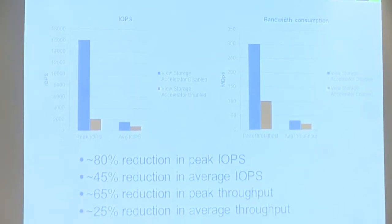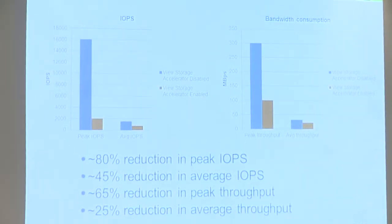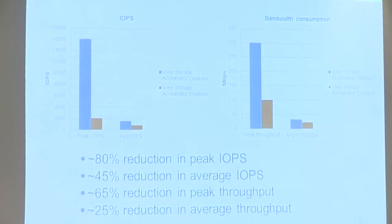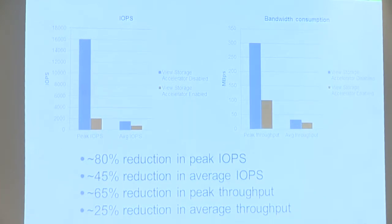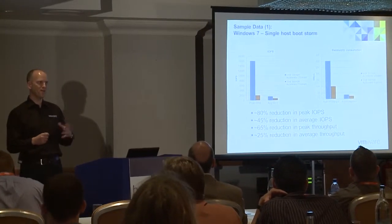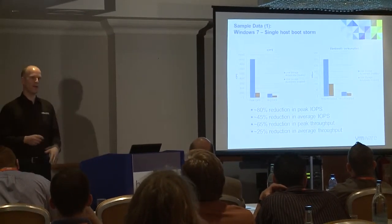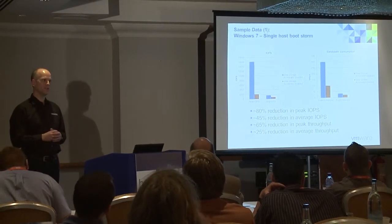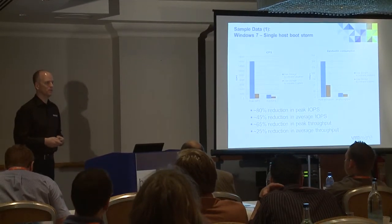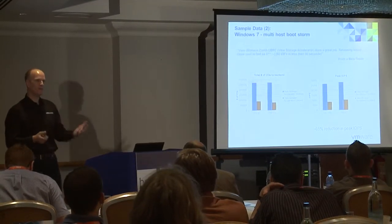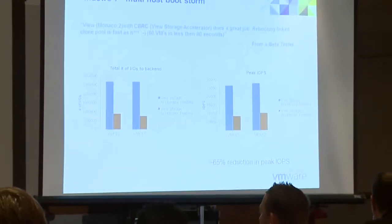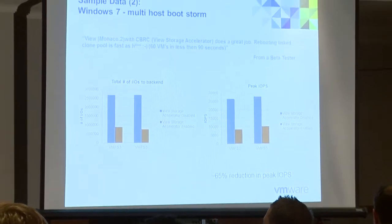The View Storage Accelerator can reduce IOPS in boot storms by up to 80% — really effective. Where that helps is in sizing: instead of sizing for worst-case peak boot storms, we can size more for steady state and average usage. The cache is unique to each host but the benefit applies across multi-host clusters too — if seven hosts are all running 100 desktops all running Windows 7, all those blocks are very, very similar.